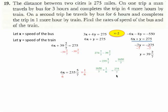Which reduces to 7 goes into 275 39 times with two left over. So I get 39 and two sevenths again. So the speed of the bus is 39 and two sevenths miles per hour. The speed of the train is 39 and two sevenths miles per hour. They're both the same speed.